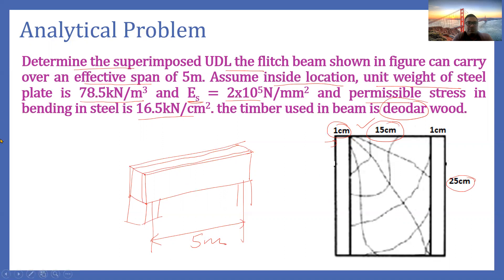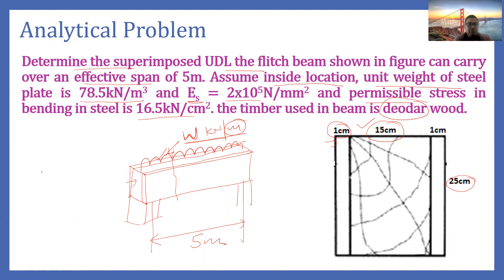Now we will start analyzing. This beam is supporting a UDL and we need to find what that UDL value will be. This UDL is exclusive of the self-weight of the beam — per unit length, excluding the self-weight of plate and beam. For that, we will use the concept that the maximum bending moment equals the moment of resistance.